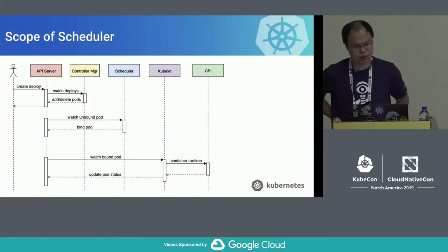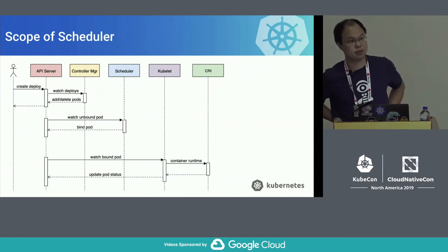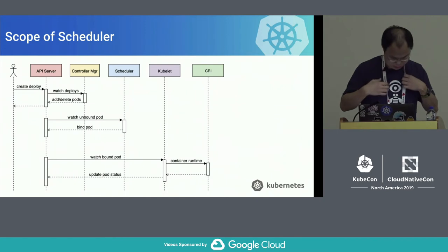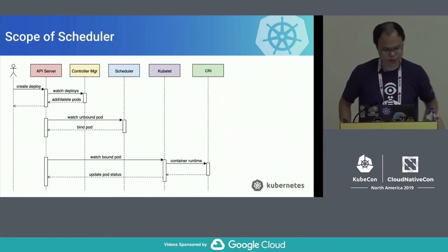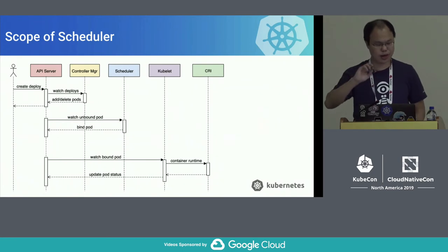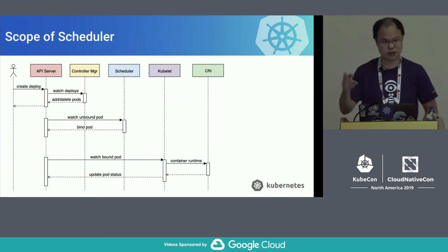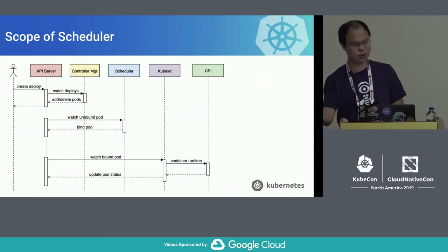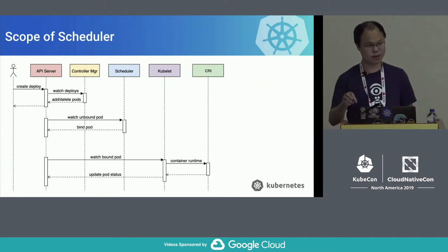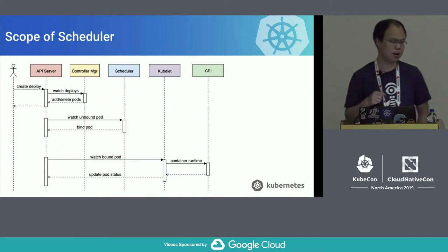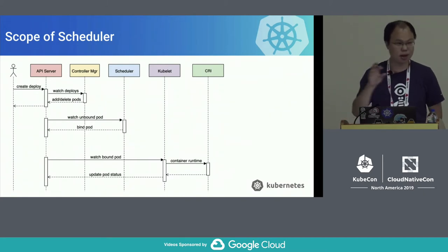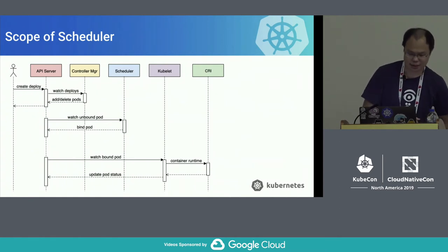First, let's talk about how scheduling works in the whole Kubernetes picture. Taking a typical user flow: a user creates a deployment, the API request goes to the API server, which does basic authentication and authorization checks, then persists the deployment API object to the backend storage etcd. Then the API server's job is done.